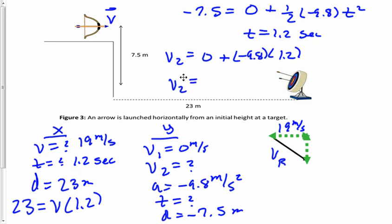Solving for v2 in the y, we get negative 11.8 meters per second. Now I'm going to record that over here, negative 11.8 meters per second. So now we need to find the value of our resultant vector here.